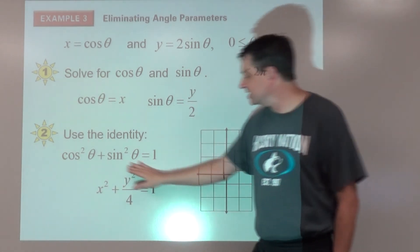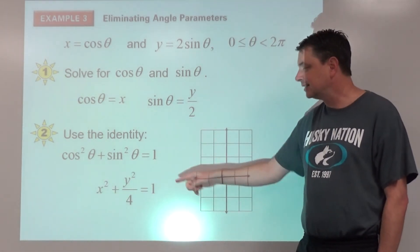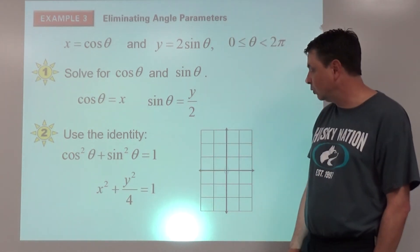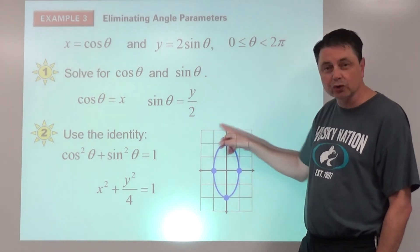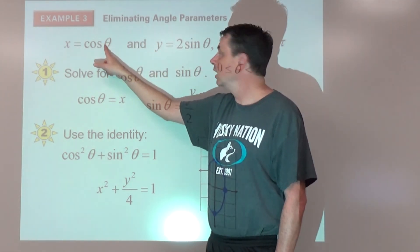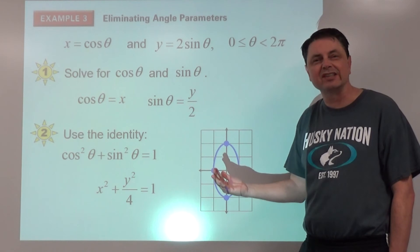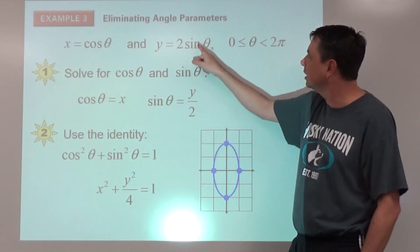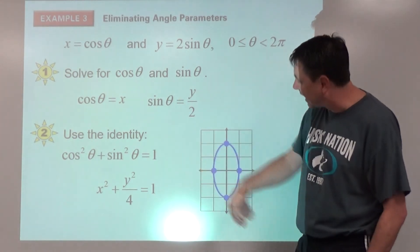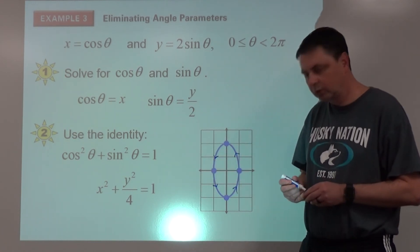We replace cosine theta with x (squaring it to get x squared) and sine theta with y/2 (squaring it to get y squared over 4), giving us x squared plus y squared over 4 equals 1. This is an ellipse — a vertical ellipse with vertices up and down at 2 and co-vertices left and right at 1. For the direction: at theta equals 0 we get (1, 0); at theta equals π/2 we get (0, 2) — so we travel counterclockwise.